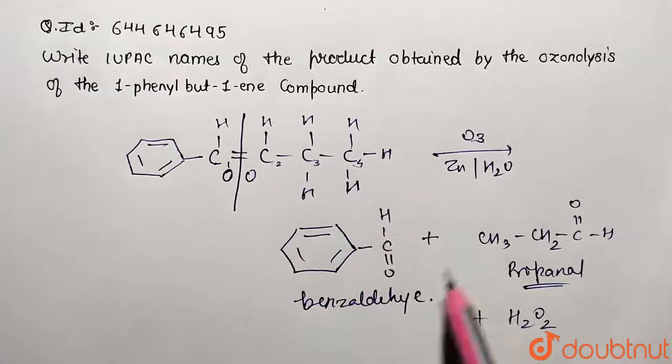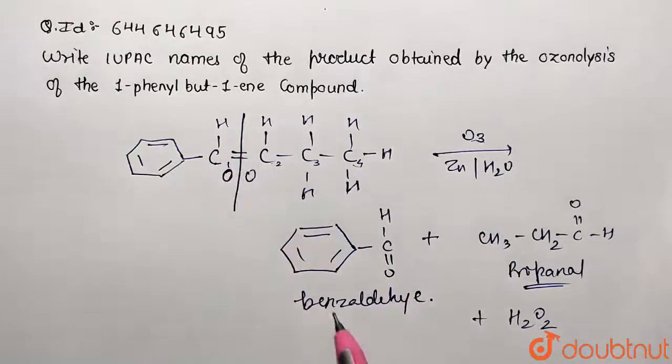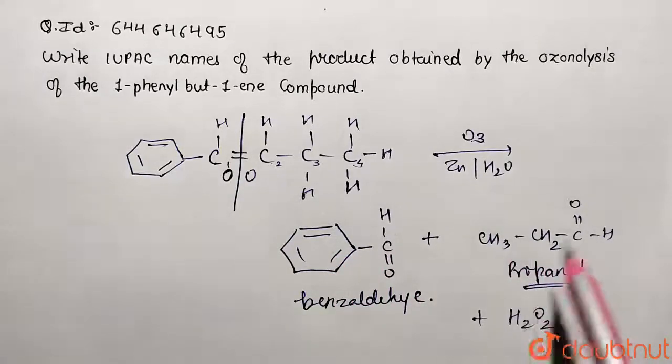So this is how our reaction is carried out. Basically, cleavage of the bond has been done and two compounds are being formed. So this is our benzaldehyde and this is our propanal. So these are the two functional units that are being formed.